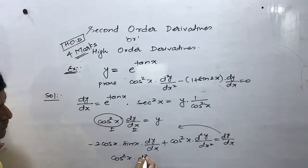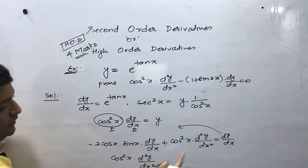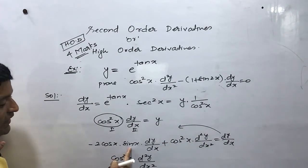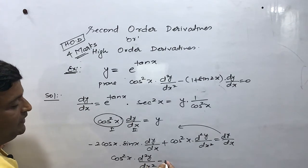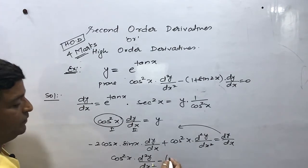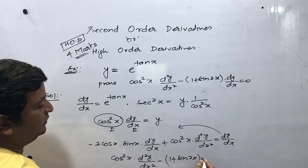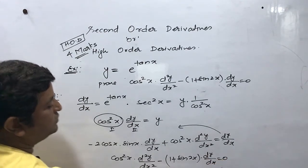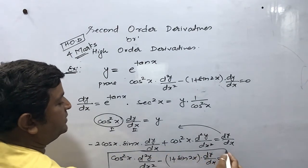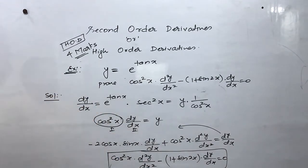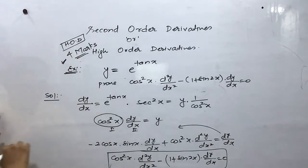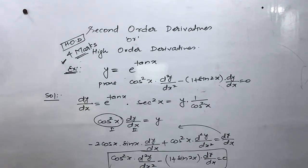Shifting the term to the other side: cos²x · d²y/dx² − (1 + sin 2x) · dy/dx = 0. And this is your HOD proof complete. So in this way you will solve HOD questions. In the next video I will explain some more good examples. Please try to attempt the questions according to this concept. Thank you.